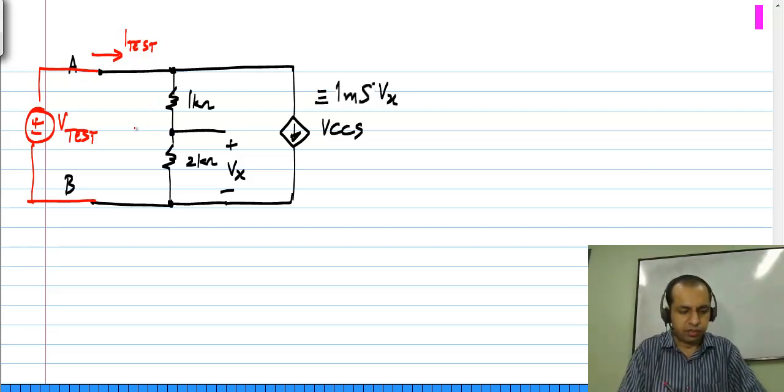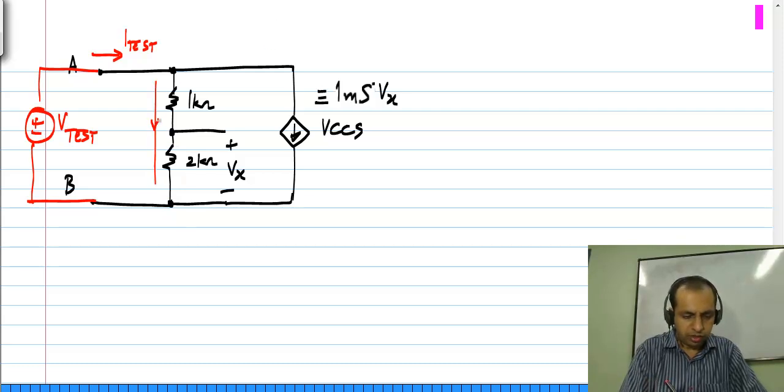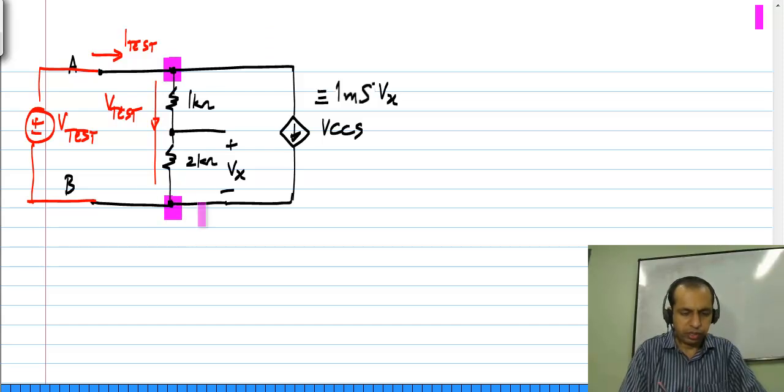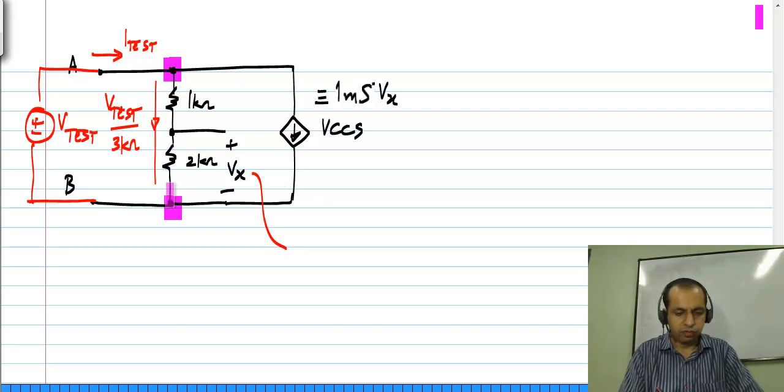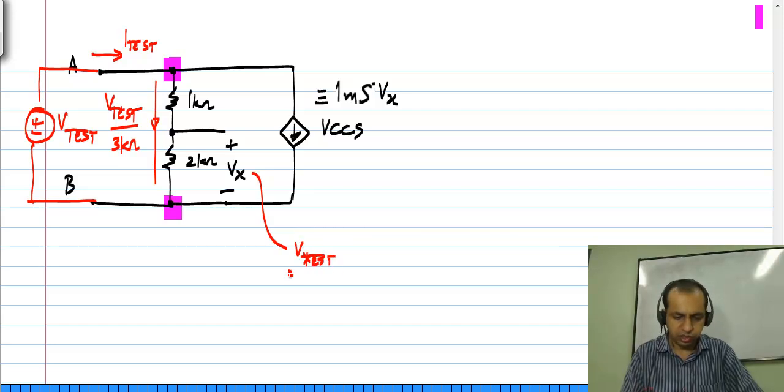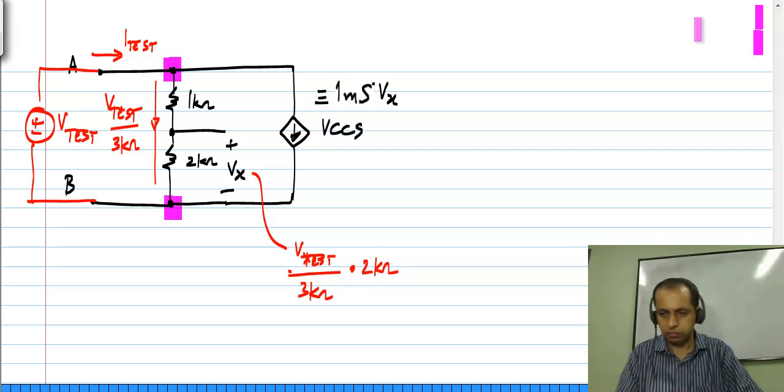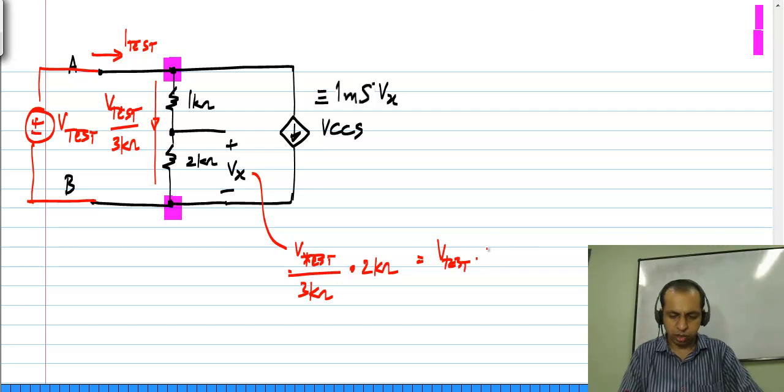Clearly if I have V test, it is applied across this series combination of two resistors. So the current that flows here is given by V test divided by the total resistance between these two. I am only looking at this series branch which consists of these two resistors. So that will be V test divided by 3 kilo ohms and this Vx would be the current flowing through that times the voltage, which is V test divided by 3 kilo ohms times 2 kilo ohms, which is V test times 2 by 3.